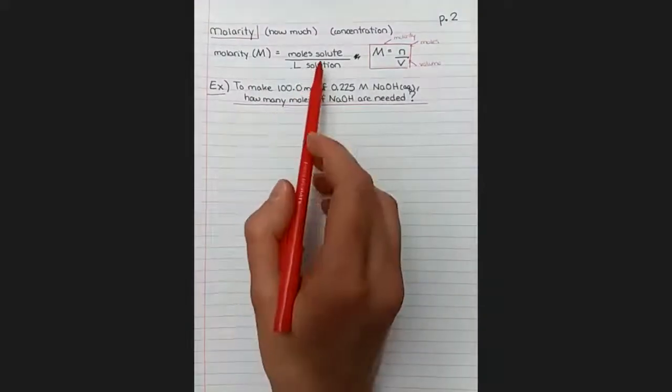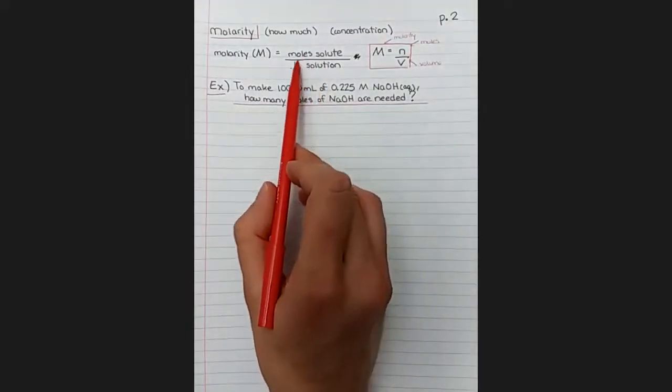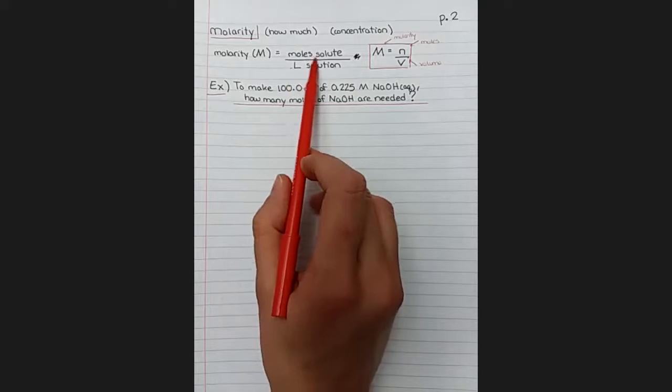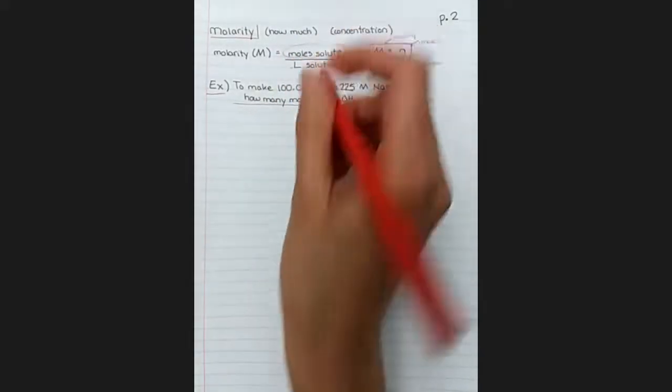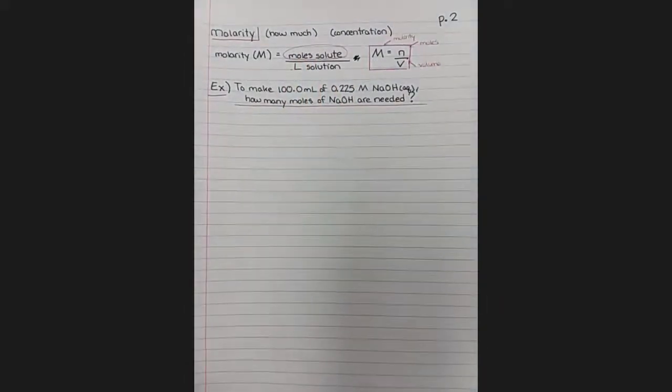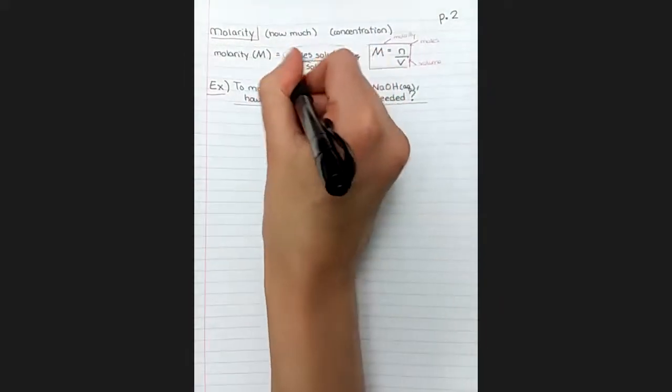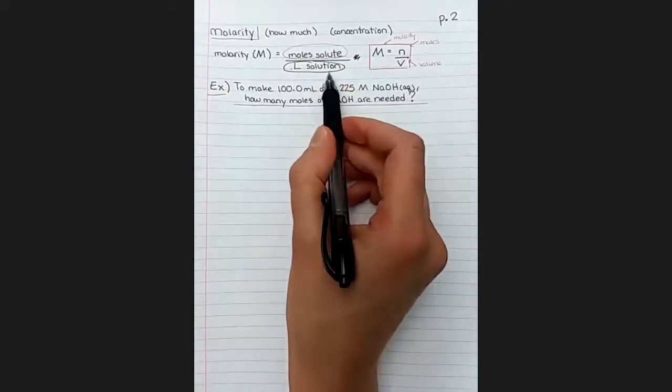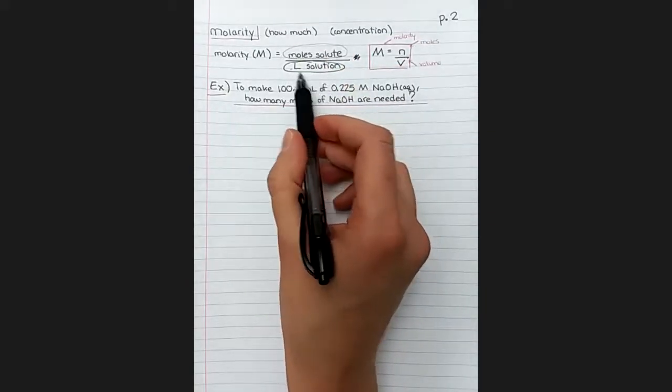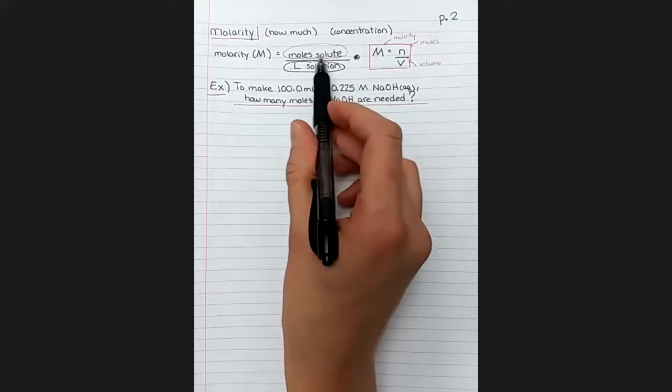And we'll give that a box because it's important. And it's important to note that I included not only what goes on the top and the bottom, but what the units are. So the top number is only a measurement of the solute, only the amount of one piece in the solution, whereas the bottom number is in liters of solution. Everything in the flask goes into this measurement, whereas the top measurement is just one of those components.